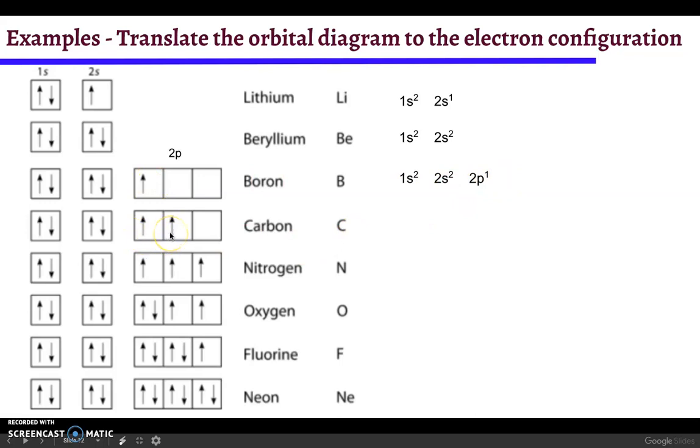What would be the electron configuration for carbon? Try to predict it on your own before I show it. It's the same thing as boron but it should have a 2 up here instead of a 1. Nitrogen should have a 3 instead of a 2 because it has three electrons.